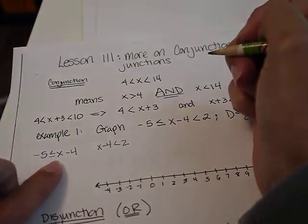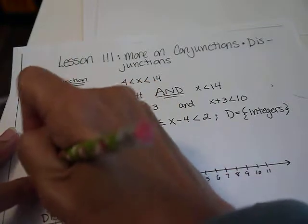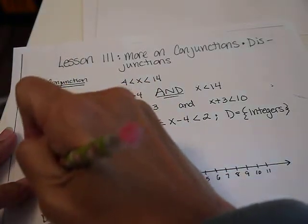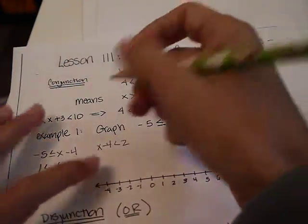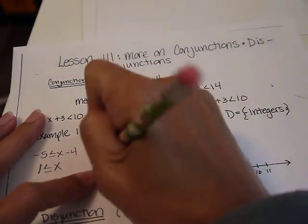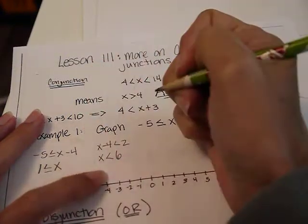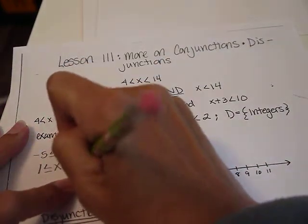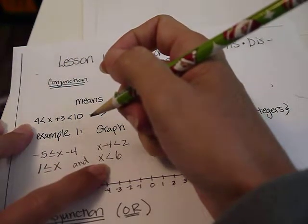So here's the first one. Do you remember how to do it? Add 4 to both sides. So that's 1 is less than X, or equal to X, and add 4 to both sides here. So X is less than 6. And these both have to be satisfied. So X is greater than or equal to 1, and less than 6.